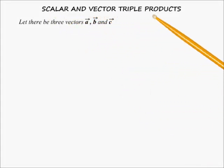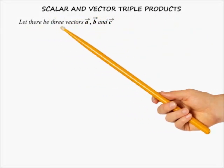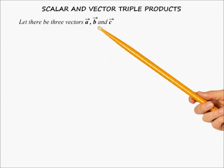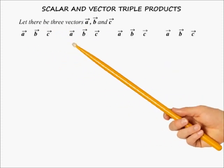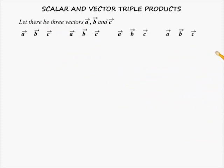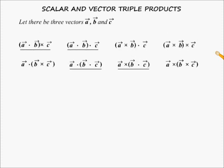Scalar and vector triple products. Let there be 3 vectors A, B and C. We write them in order and try to place a dot or a cross in between them. The dot and cross operation cannot be done simultaneously, so we put parentheses to indicate which operation is to be done first.